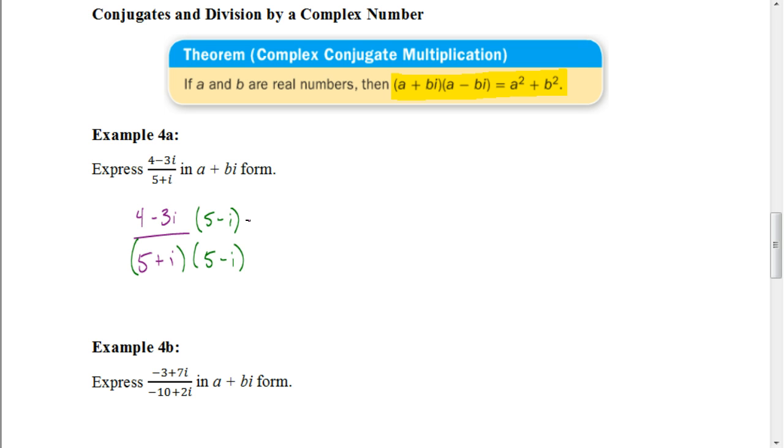So let's look at the denominator. Now we could multiply this, we could foil these together. And if I did that, 5 times 5 would give me 25, and 5 times negative I would be negative 5I. Our inner terms, I times 5, would give us a positive 5I. And our last terms, I times negative I, would give me negative I squared.